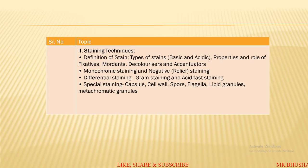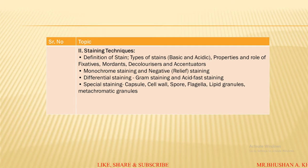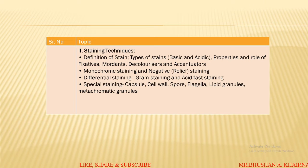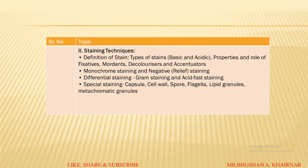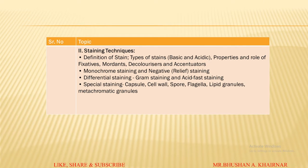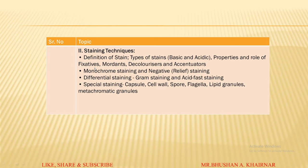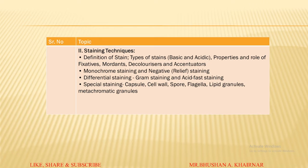The second topic in the first credit is staining technique. Staining basically refers to giving a color to the cell. We will study the definition of stains, the different types of stains — acidic and basic stains present in microbiology — and the properties and role of fixatives, mordants, decolorizing agents, and accentuators. We will then study monochrome staining — 'mono' means single, 'chrome' means color — so we use a single color for staining a microorganism.